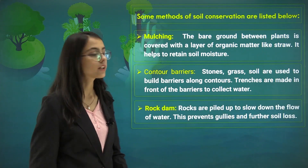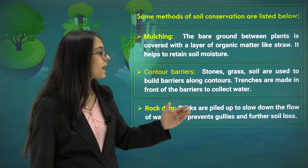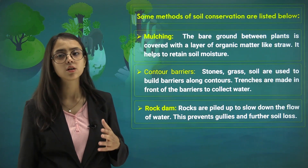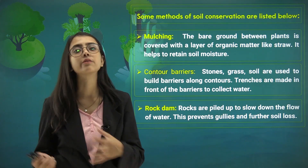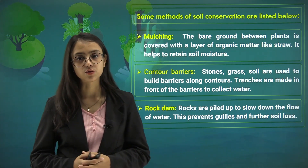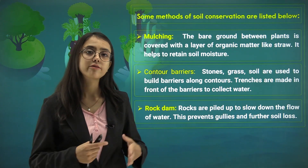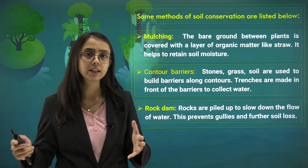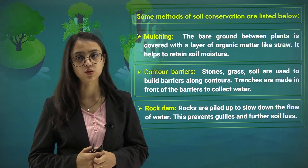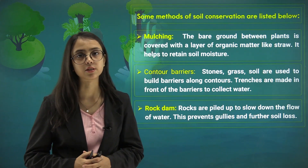Then we have rock dams. Rocks are piled up to slow down the flow of water in rivers and water resources. This prevents gullies which are formed in fields and result in soil erosion. Therefore, soil loss is prevented.